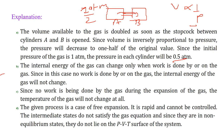The internal energy of the gas can change only when work is done by the system or on the gas. In this case, no work is done by the gas or on the gas, so the internal energy of the gas will not change. Since no work is done by the gas during expansion — it is just moving freely from one cylinder to another — the temperature of the gas is not going to change either. This is a case of free expansion; it is rapid and cannot be controlled. The intermediate states do not satisfy the gas equation since they are in non-equilibrium state, so they will not lie on the PVT surface of the system.